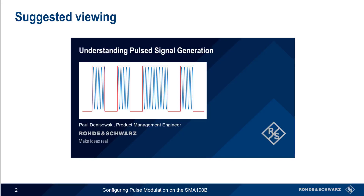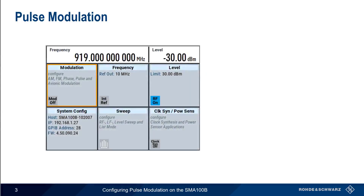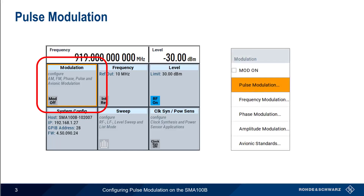If you're unfamiliar with these topics, you might want to watch the presentation, Understanding Pulse Signal Generation, before beginning this presentation. On the SMA-100B, we access Pulse Modulation by selecting the Modulation tile and then choosing Pulse Modulation from the menu.